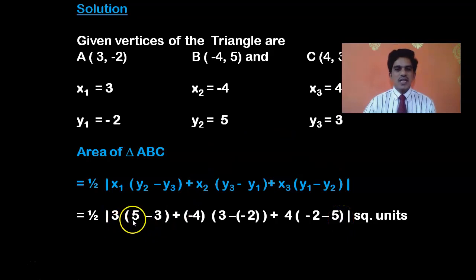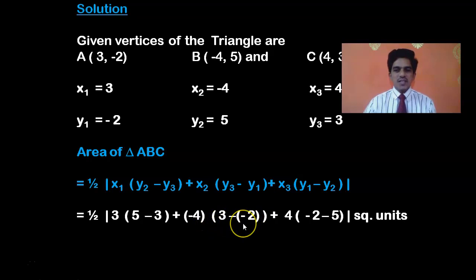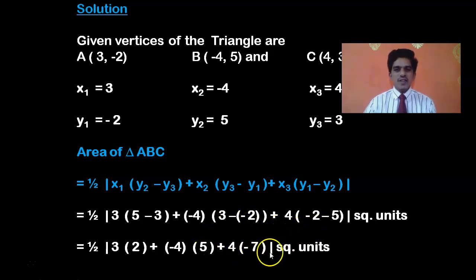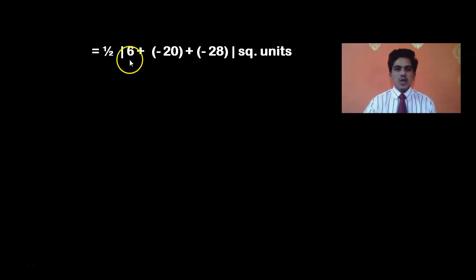When you simplify: 5 minus 3 is 2, so the first bracket becomes 2. Then -4 times (3 - (-2)) is 3 plus 2 which is 5. Then the third bracket: -2 minus 5 becomes -7. So we have 3(2) + (-4)(5) + 4(-7), which gives 3 × 2 = 6, -4 × 5 = -20, and 4 × (-7) = -28. So we have 1/2 modulus of (6 + (-20) + (-28)).